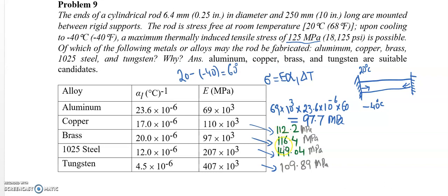So all the values are less than 125 MPa except for 1025 steel. And so that means tungsten, brass, copper, and aluminum can be used, but 1025 steel cannot be used in that situation.